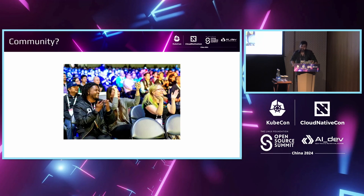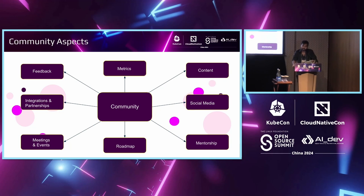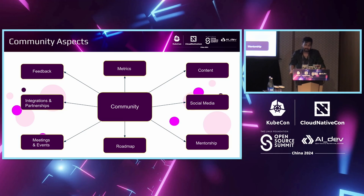We in ourselves are the community. Here are some community aspects which help build a community. You start with feedback — it's very important to have a feedback system between the core group building the project and the larger community trying to use it or get involved. Metrics are also very important. You need to measure community success with certain metrics; you cannot define success if you don't have metrics in place. You need to analyze how your community is performing and what you are achieving.